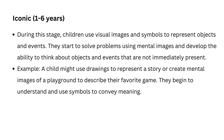The iconic stage spans 1 to 6 years. In this stage, children start to use visual images and symbols to represent objects and events — learning shifts from physical actions to mental images. This stage is characterized by the use of pictures or icons to stand for objects, people, or experiences. For example, a child might draw a picture to represent their family or use a map to find their way to school. They begin to solve problems by thinking about them rather than physically manipulating objects.